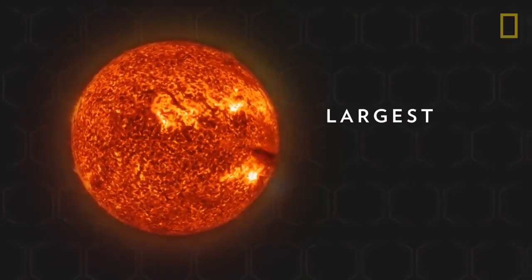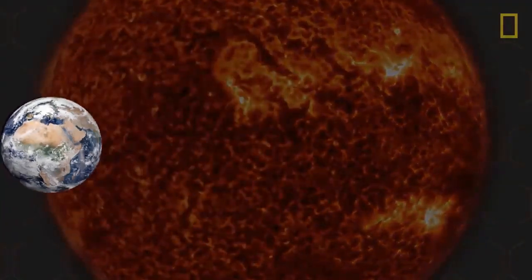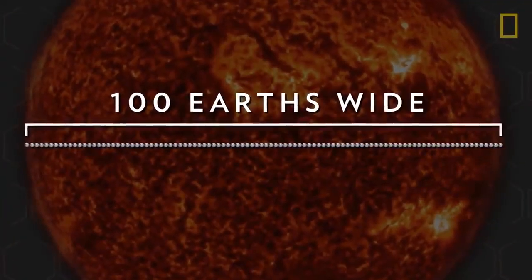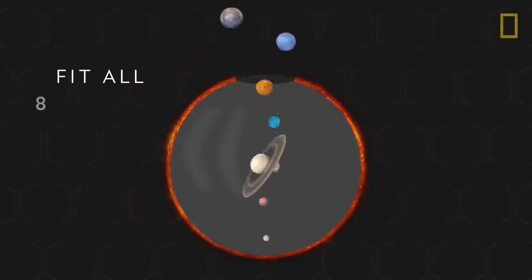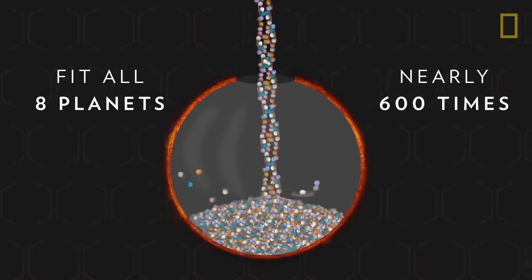Our sun is the largest and most massive object in the solar system. It's more than 100 Earths wide and could theoretically fit all eight planets inside nearly 600 times.